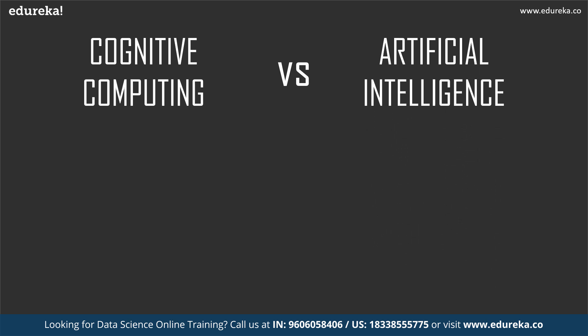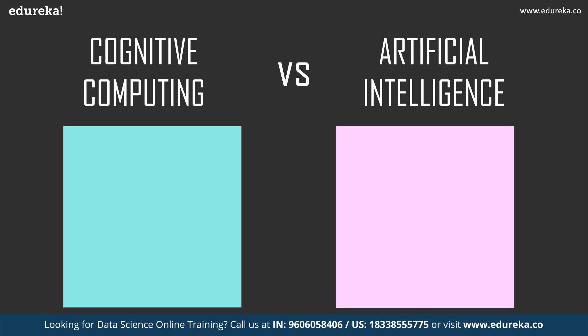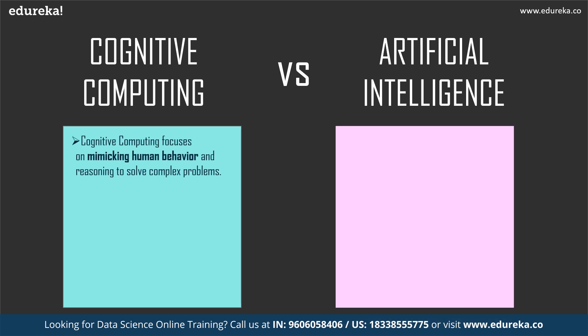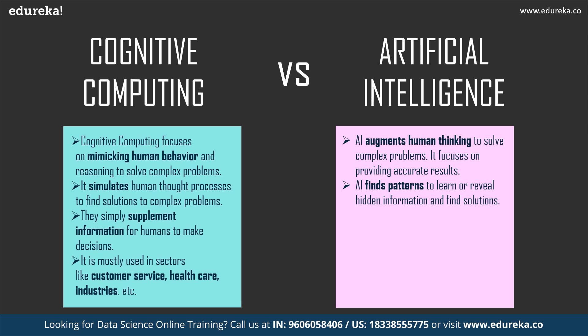Cognitive computing focuses on mimicking human behavior and reasoning to solve complex problems, whereas AI augments human thinking to solve complex problems and focuses on providing accurate results. Cognitive computing simulates human thought processes to find solutions, while AI finds patterns to learn, reveal hidden information, and find solutions.